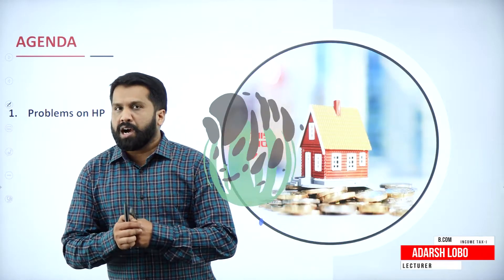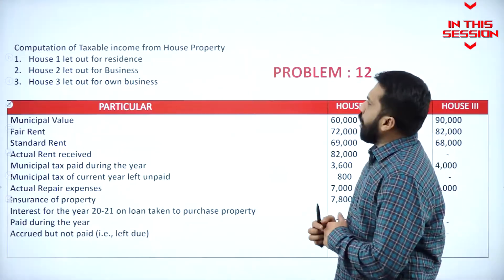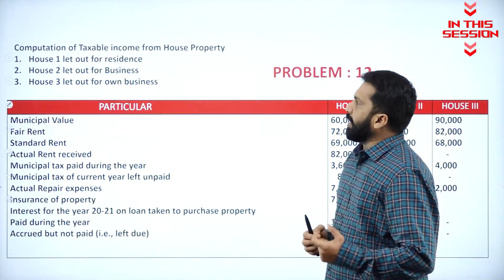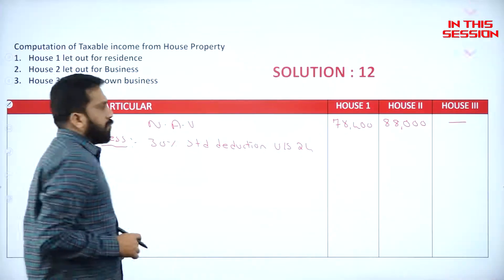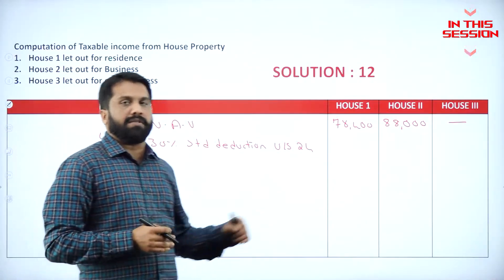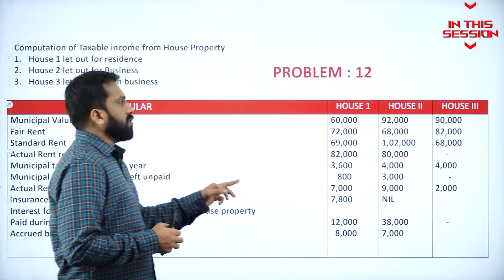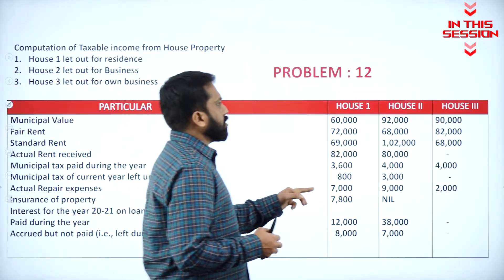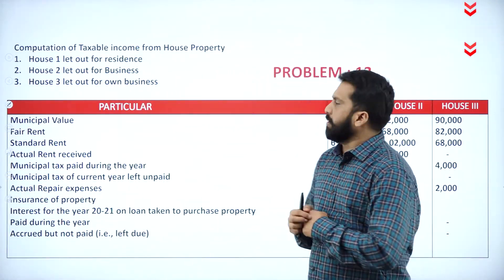We have problems on house property. House 1 is let out for residence. We are supposed to minus 30% of the whatever actual answer. You have House 1, House 2, as well as House 3.